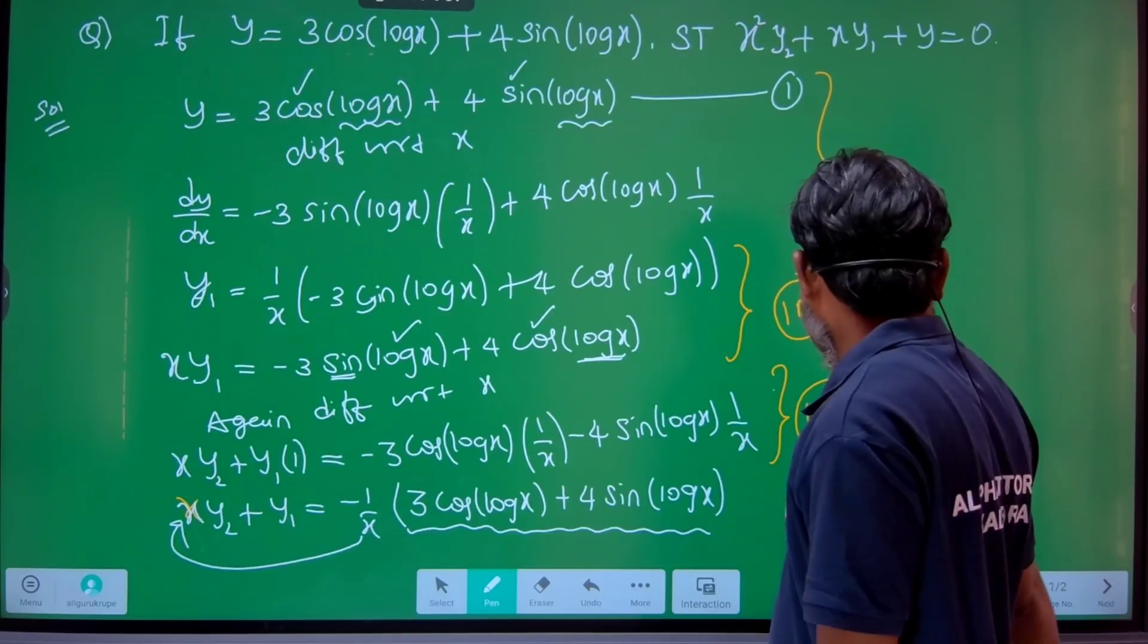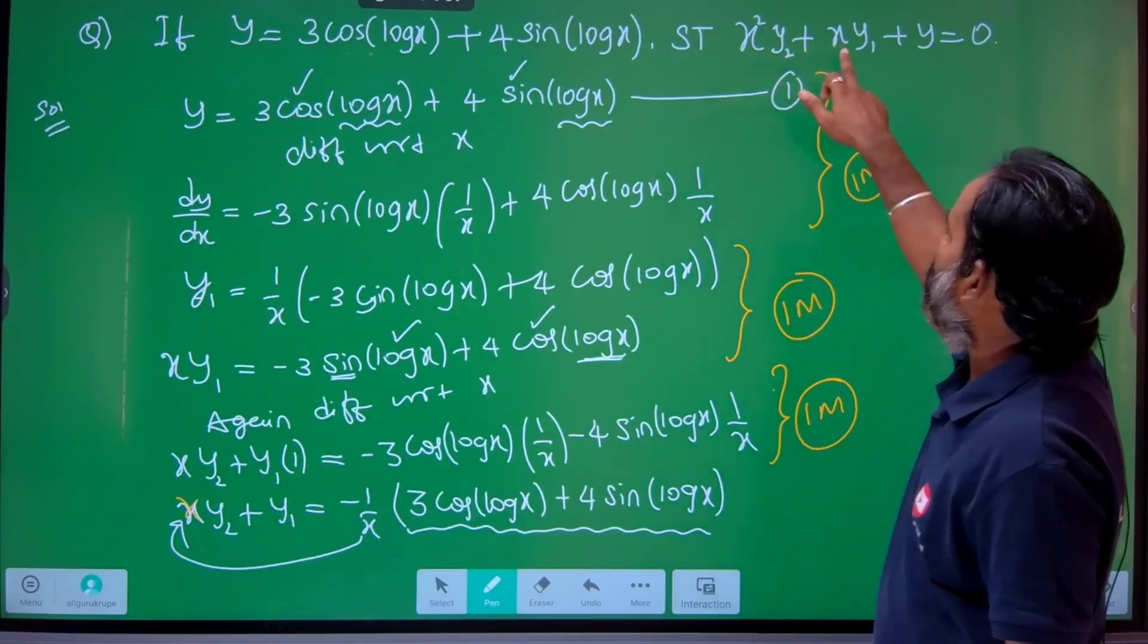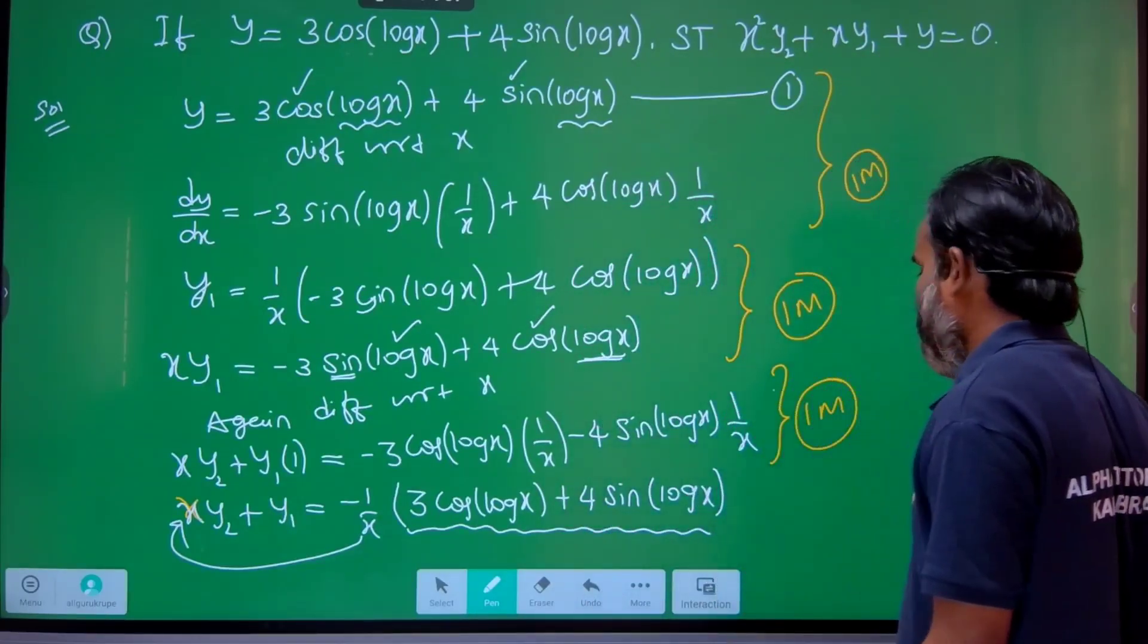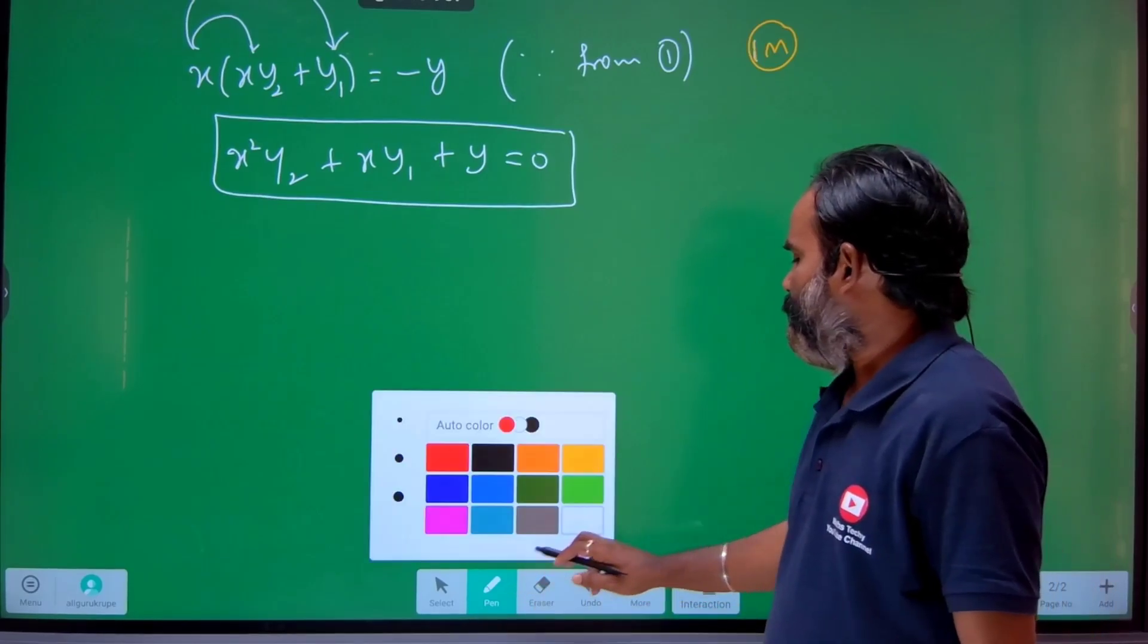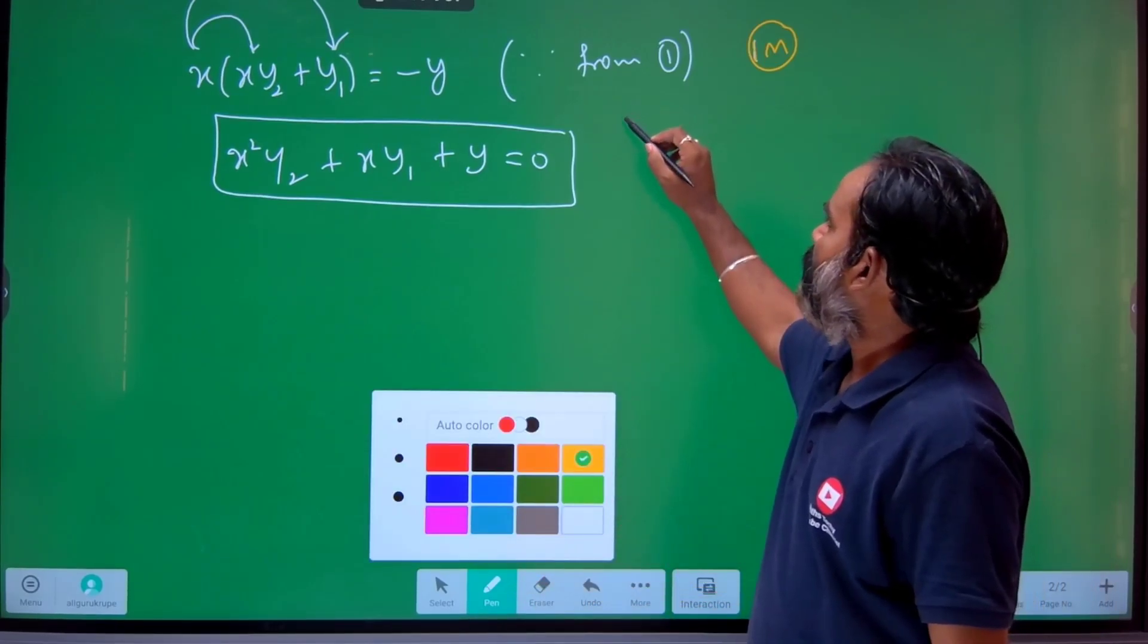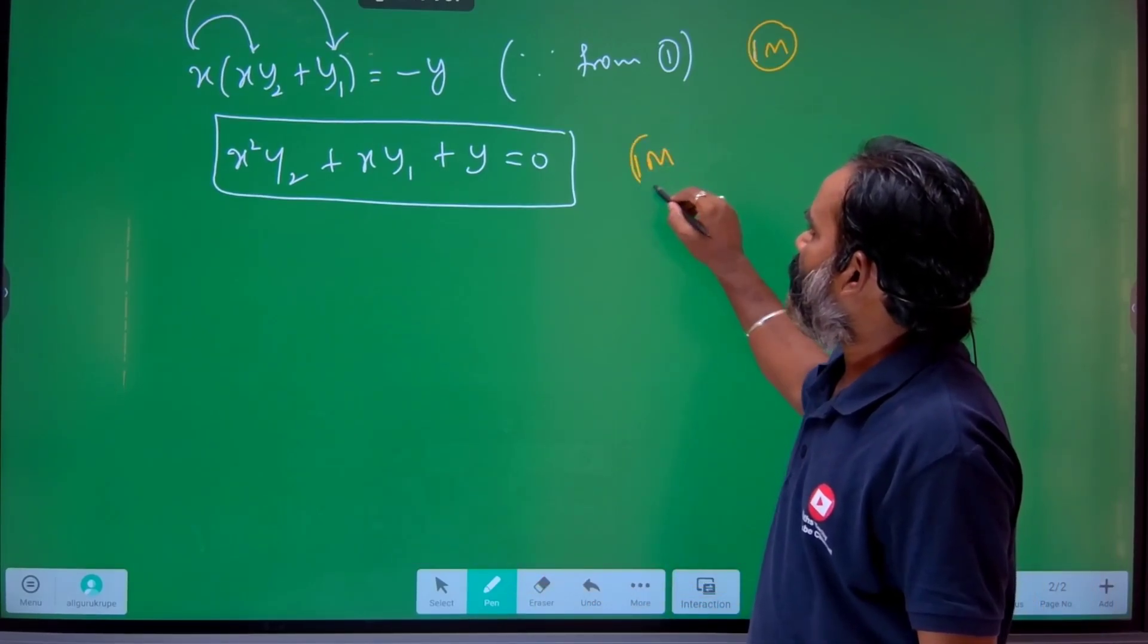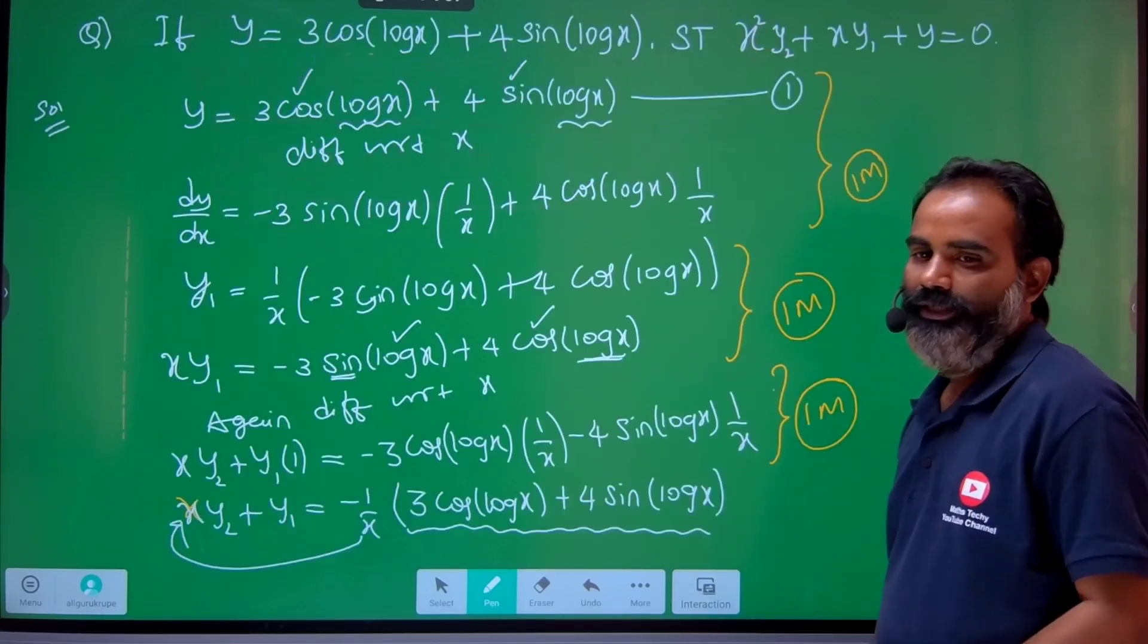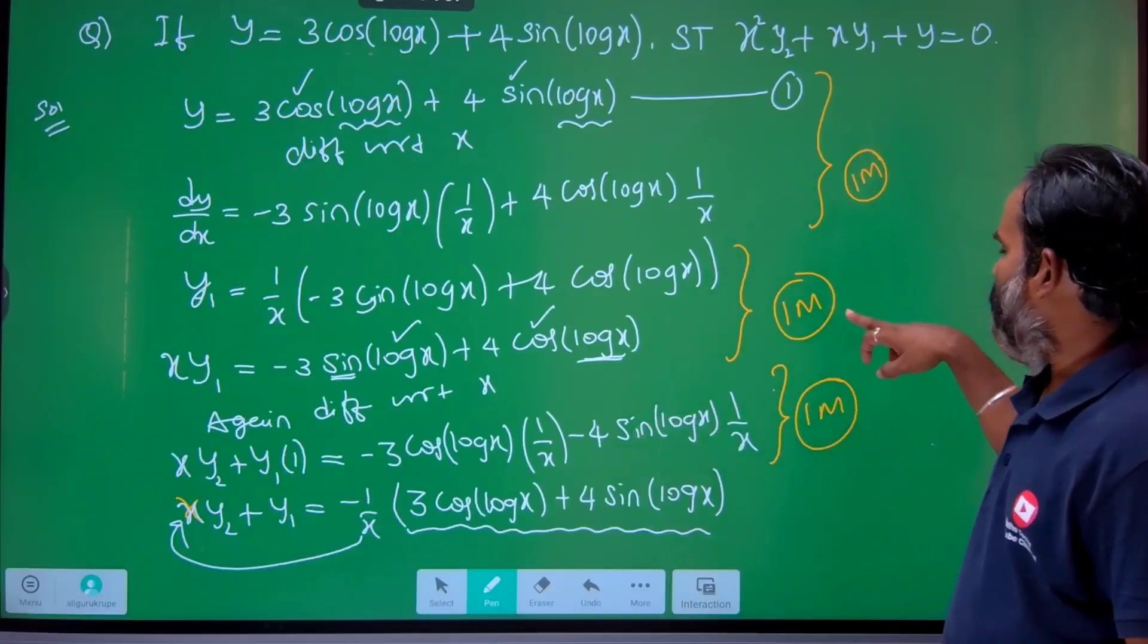Now see, this is line one. x²y₂ + xy₁ + y = 0, hence proved. Finally correct. Again you will get 1 mark, 1 plus 1 equals 2 marks. 1 plus 1 total 3. Complete 5 marks.